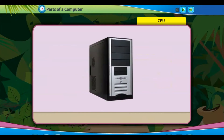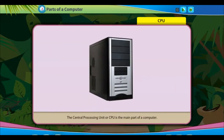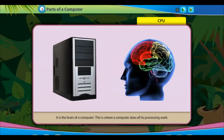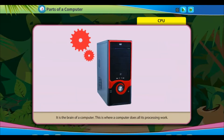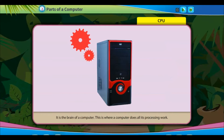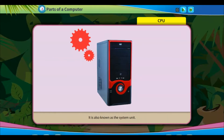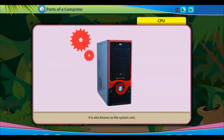The central processing unit, or CPU, is the main part of a computer. It is the brain of a computer — this is where a computer does all its processing work. It is also known as the system unit.